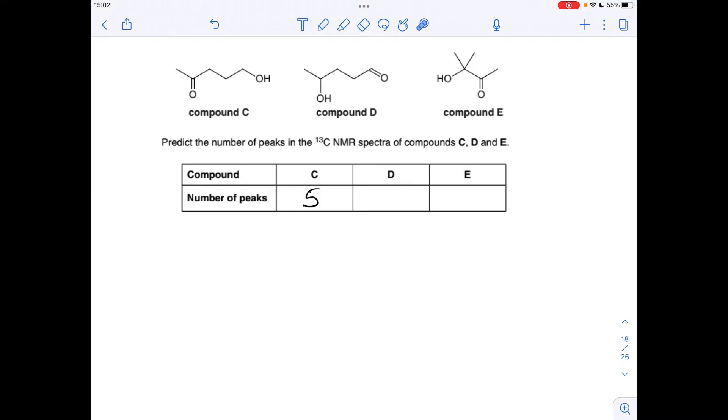Likewise, in compound D, these are all in different environments, so it's 5 again. Moving on to compound E, these two methyl carbons are actually equivalent to each other, so we've got 1, 2, 3, 4.